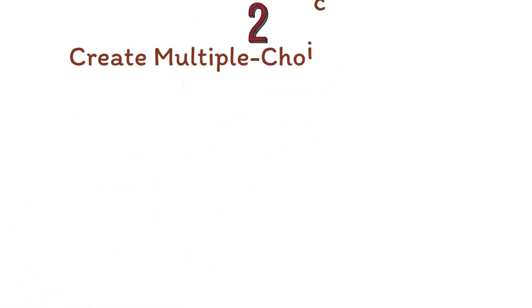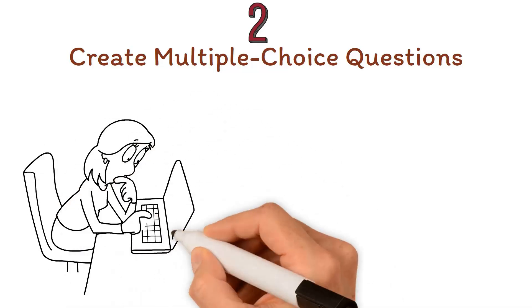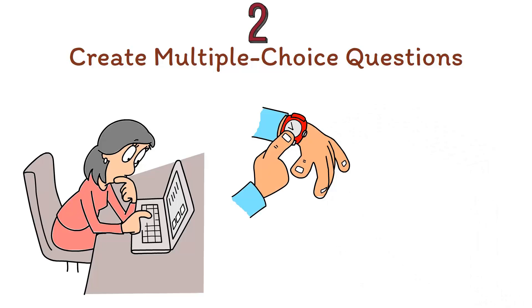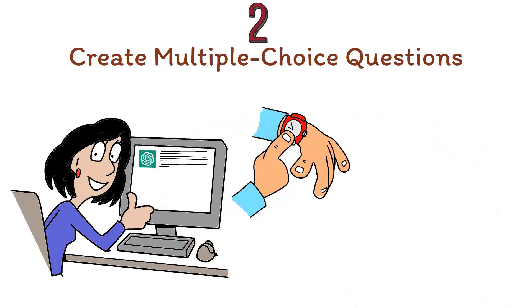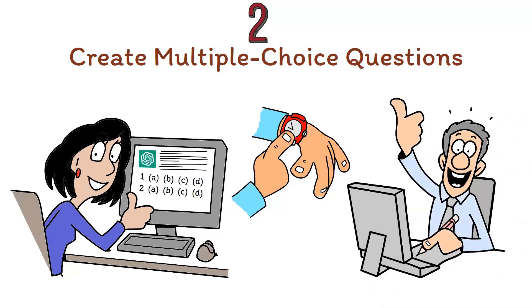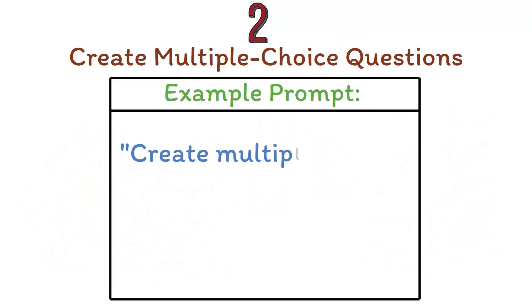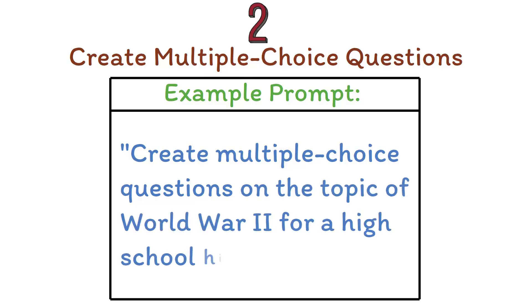Number two: create multiple choice questions. Developing multiple choice questions that effectively measure understanding can be time-consuming for teachers. ChatGPT simplifies this task by generating questions based on the provided content or topic, allowing educators to focus on other aspects of their work. Example prompt: Create multiple choice questions on the topic of World War II for a high school history class.